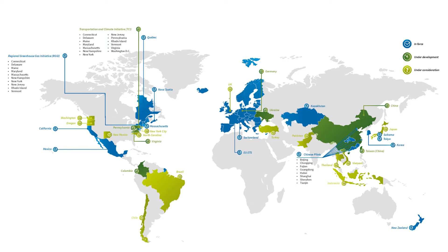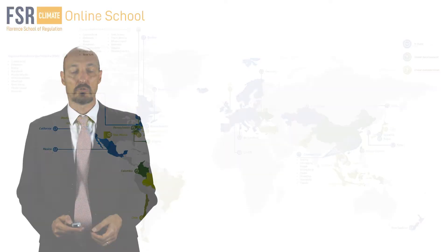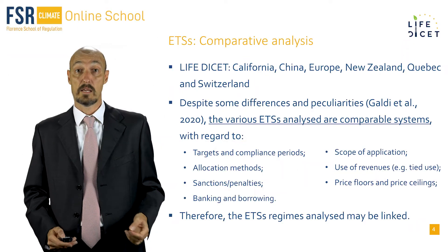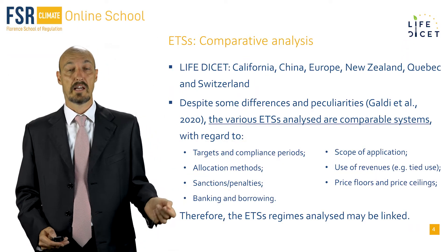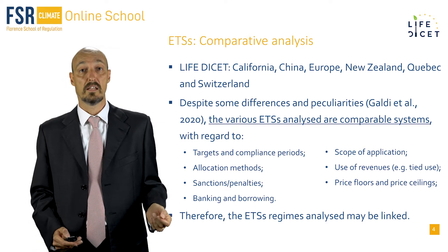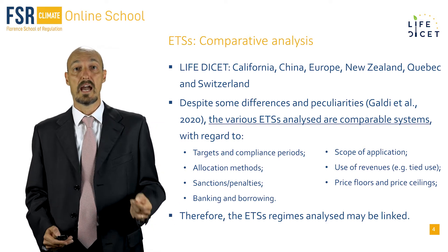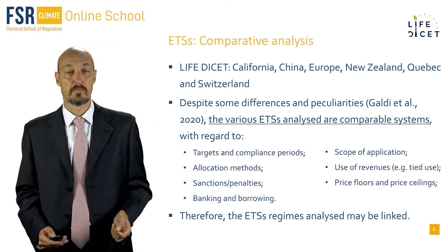Our project, the Live Digit Project, focuses on six main emission trading systems, namely California, China, Europe, New Zealand, Quebec and Switzerland.